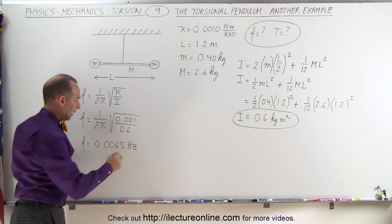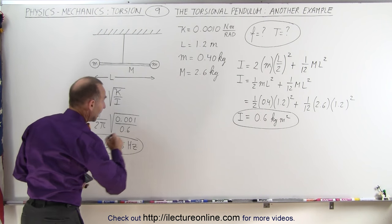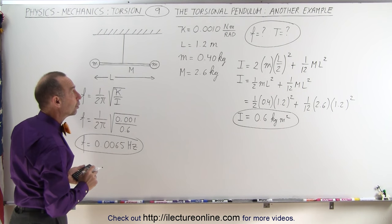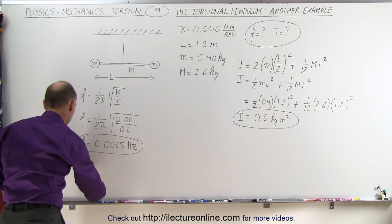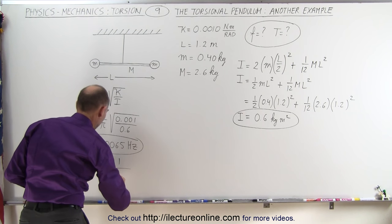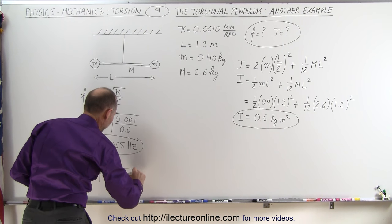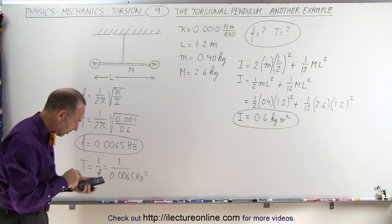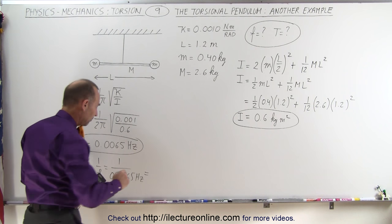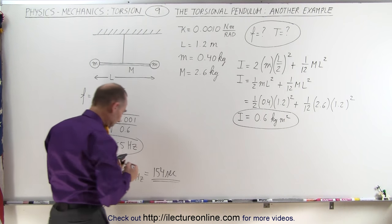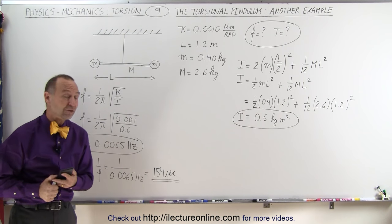Now the period of motion is equal to 1 over the frequency, which is 1 divided by 0.0065 hertz, which gives 154 seconds. So the period of oscillation is 154 seconds.